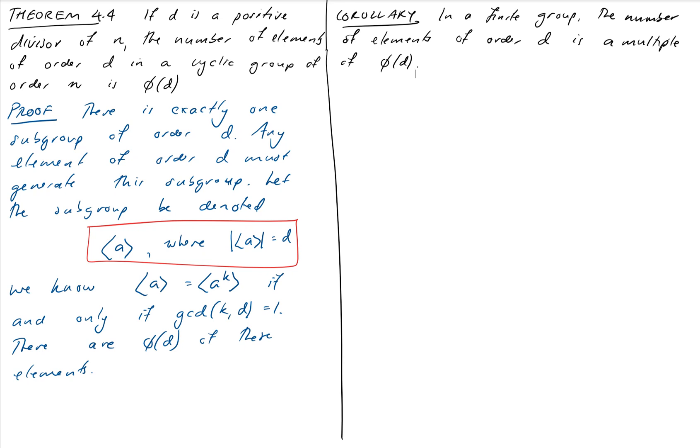Now this theorem has a corollary which allows us to generalize the idea to any finite group, not just cyclic ones. So the corollary to this theorem is that in a finite group, but this time we're not talking about a cyclic group necessarily, the number of elements of order D is a multiple of phi of D. So let's have a go at proving this one also. Well, let's just rule off some simple cases first. Often a good idea. So if there are no elements of order D, we're done, because phi of D clearly divides zero.